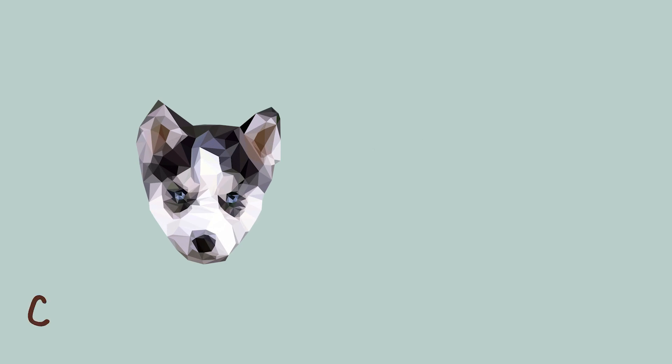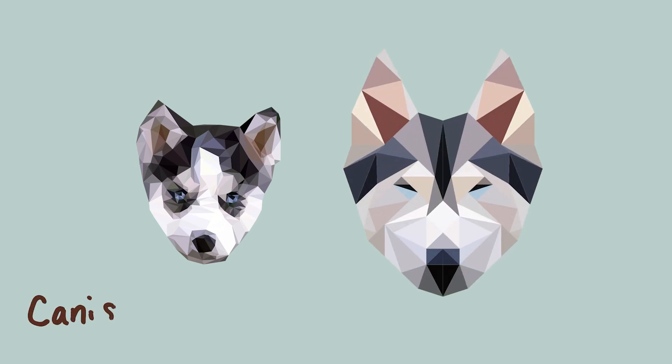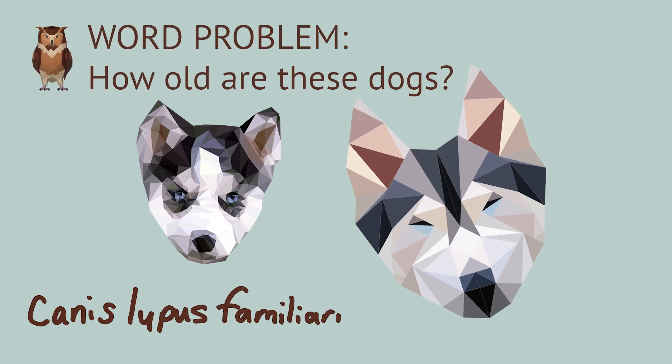Key is a husky puppy. His best friend Sherpa is twice as old. But in two years, he will be three-quarters as old as Sherpa. How old are Key and Sherpa?